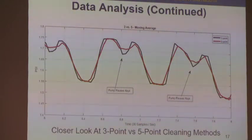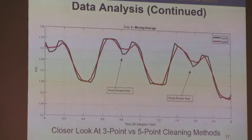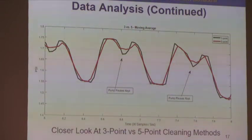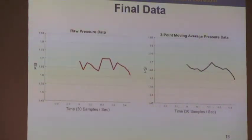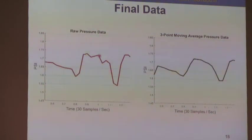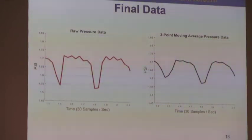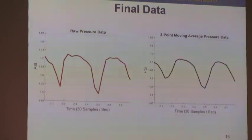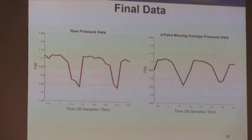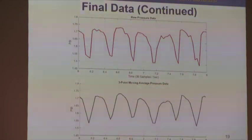Here's an in-depth look at our data analysis and the different types of moving averages we compared. At certain points, we programmed the pump to turn off to try to get a parabolic curve from our initial data set. The five-point moving average in red doesn't preserve the pause as much as we wanted and cuts off the corners between cycles. So we went with the three-point moving average to keep more of the pause. Our final data shows the raw pressure data alongside the three-point moving average on the same data — this is how we achieved the parabolic shape very similar to the left ventricle pressure.